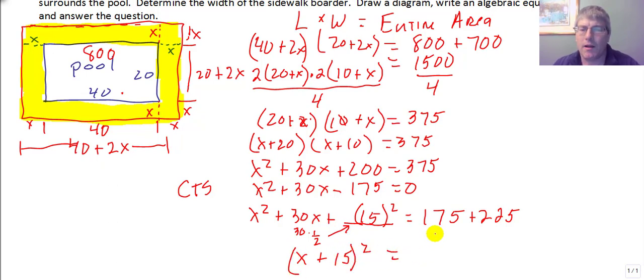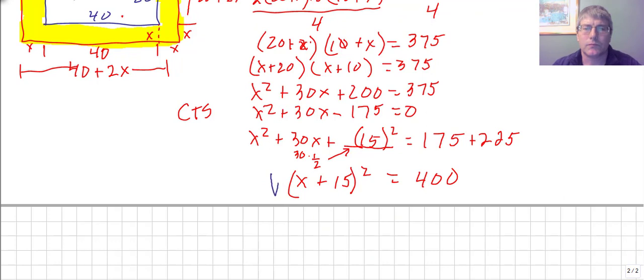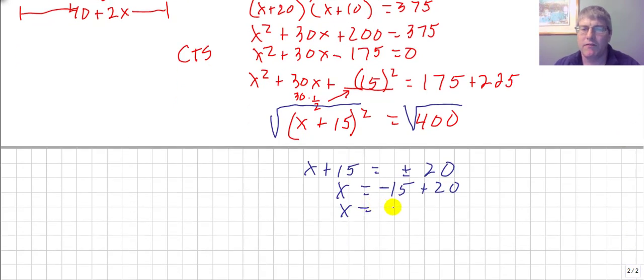Quantity squared equals, and 175 plus 225 is 400. I will take the square root of both sides. Get x plus 15 equals plus or minus 20. And x, my width, x is equal to negative 15 plus 20. And x is equal to negative 15 minus 20.